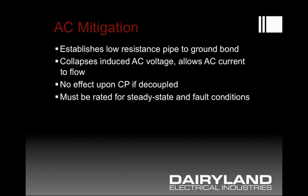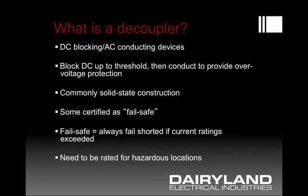A decoupler is a DC blocking device that can simultaneously conduct AC. It blocks DC up to a threshold voltage — usually several volts — and beyond that voltage, which would be considered abnormal, it turns on and conducts to provide overvoltage protection for lightning, fault current, or any other abnormal condition. These days this device is typically solid state and is generally fail-safe: if exposed to current beyond its ratings, the device will always fail as a short. This can be tested in a power lab to confirm that excessive current produces the desired result of failing shorted. It would not be desirable to fail open, as you'd have no further overvoltage protection of any kind.